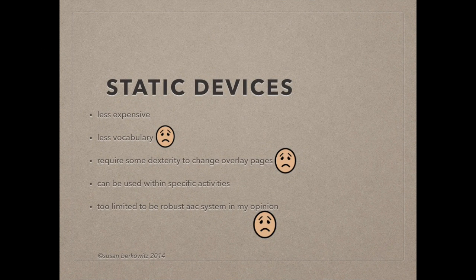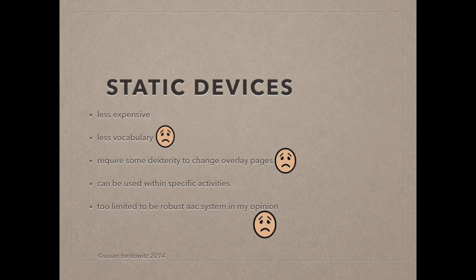Static display devices are less expensive, ranging from about $100 to under $3,000. They often require some manual dexterity to change the overlays to a different set of vocabulary words or messages. They offer less vocabulary than dynamic display devices, making them less functional for most users. In my opinion, they're useful for activity-based interactions, but not robust enough to serve as someone's complete AAC system.